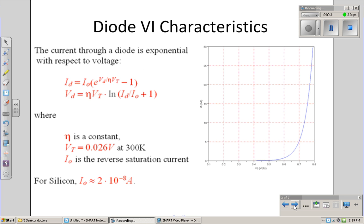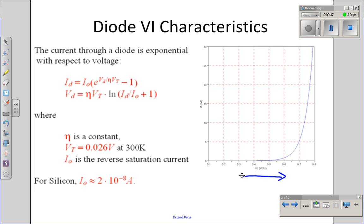The VI characteristics for a diode are exponential in nature. As the voltage increases, the current goes up exponentially. The constant I0 is the reverse saturation current. That's the current I get through a diode when I try to force current through it backwards.